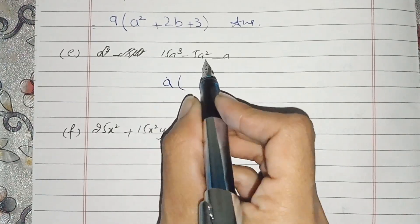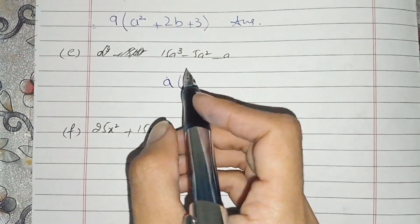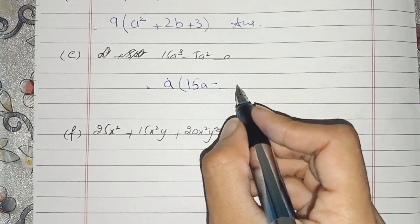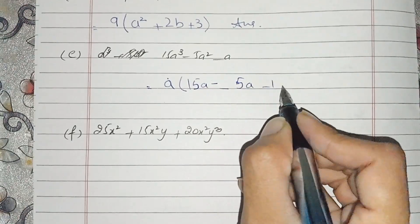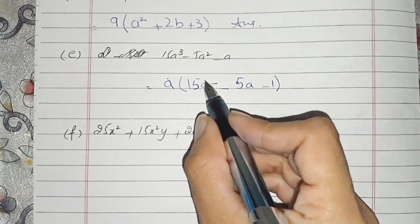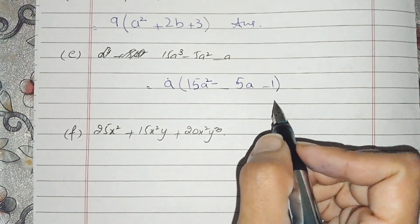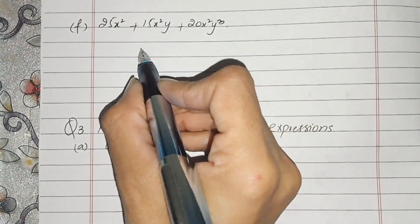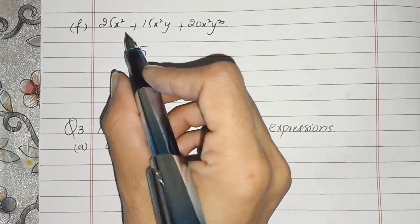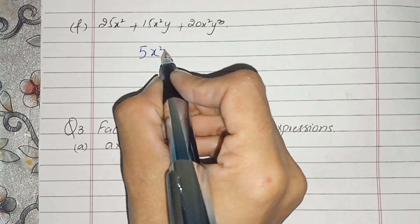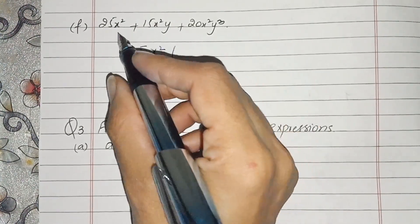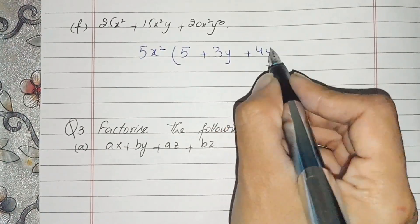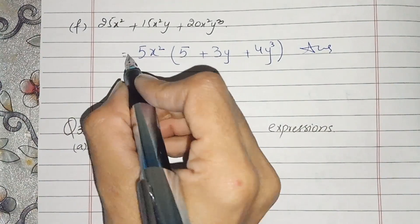Now for part f, the only common factor is 5 — 5x squared — and all three terms have x squared. Left is 5 plus 3y plus 4y cubed. And this is the answer of f part. Now question number 2 is solved.